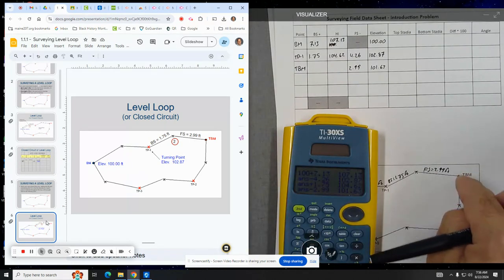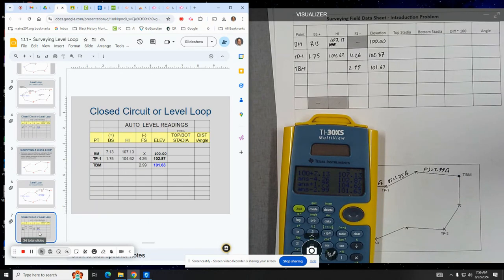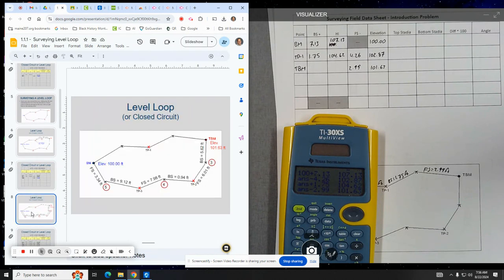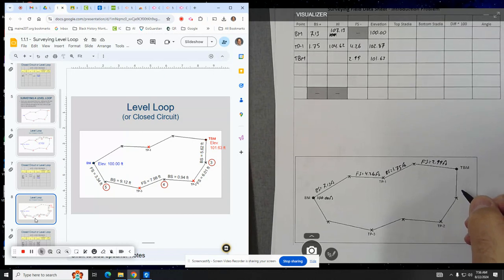And again, they would just keep on leapfrogging. Now the instrument would leapfrog the rod to here and then the rod would leapfrog to there, so on and so forth. Again, this is just highlighting or showing the calculations again.